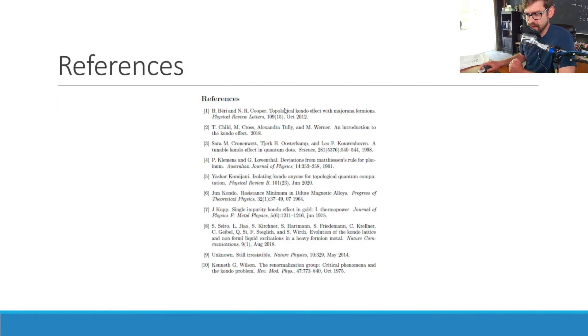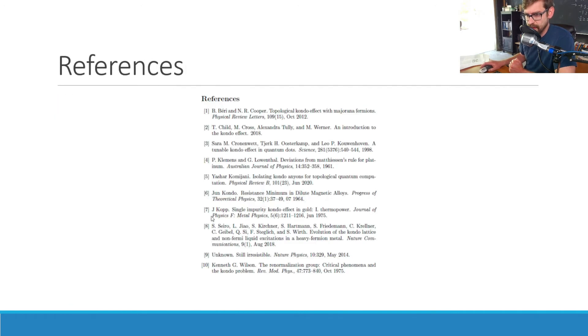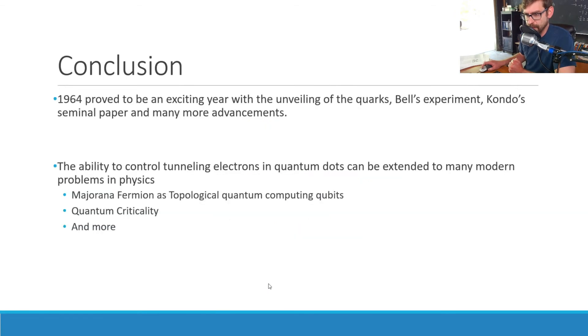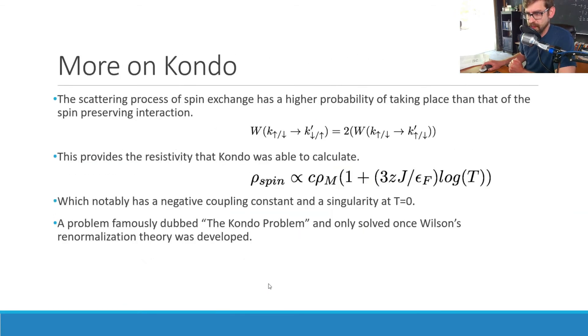And this was the problem that was famously dubbed the Kondo problem that would be solved about a decade later by Wilson and his renormalization theory. And I think I have the link to that. Yeah, it's right here. The renormalization group, critical phenomenon, and the Kondo problem. And that was this paper that he was able to show where the Kondo problem was solved, basically by electron shielding at higher levels of perturbation, and basically introducing quasi-particles on the Fermi surface.